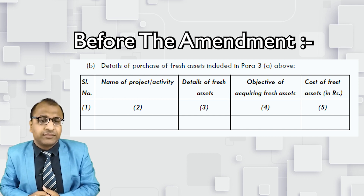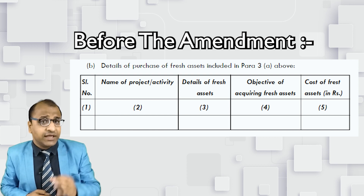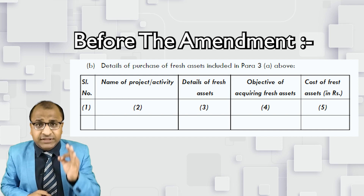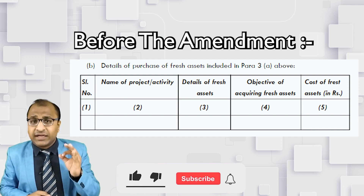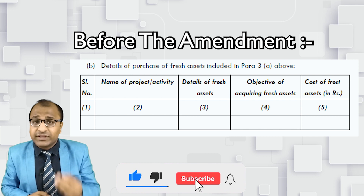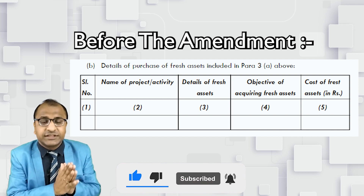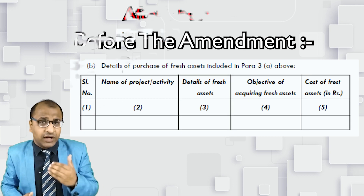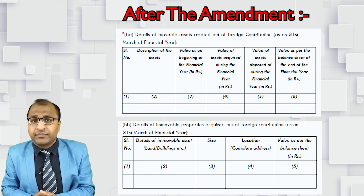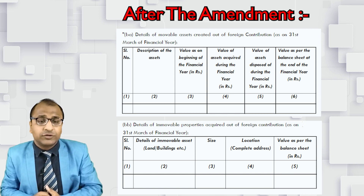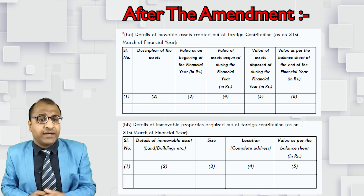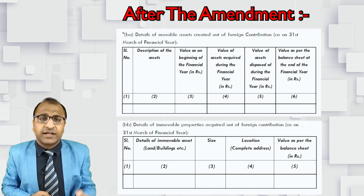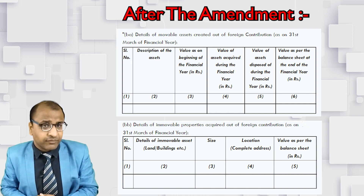Before the amendment, only the details of purchase of fresh assets were to be reported in point number 3B of the FCRA return — the name of the project, the nature of the asset purchased, the objective for which it is purchased, and the cost was required to be disclosed. Now, after the amendment, point numbers 3BA and 3BB have also been inserted, where the details of movable assets and immovable properties created out of FCRA contribution have to be given.